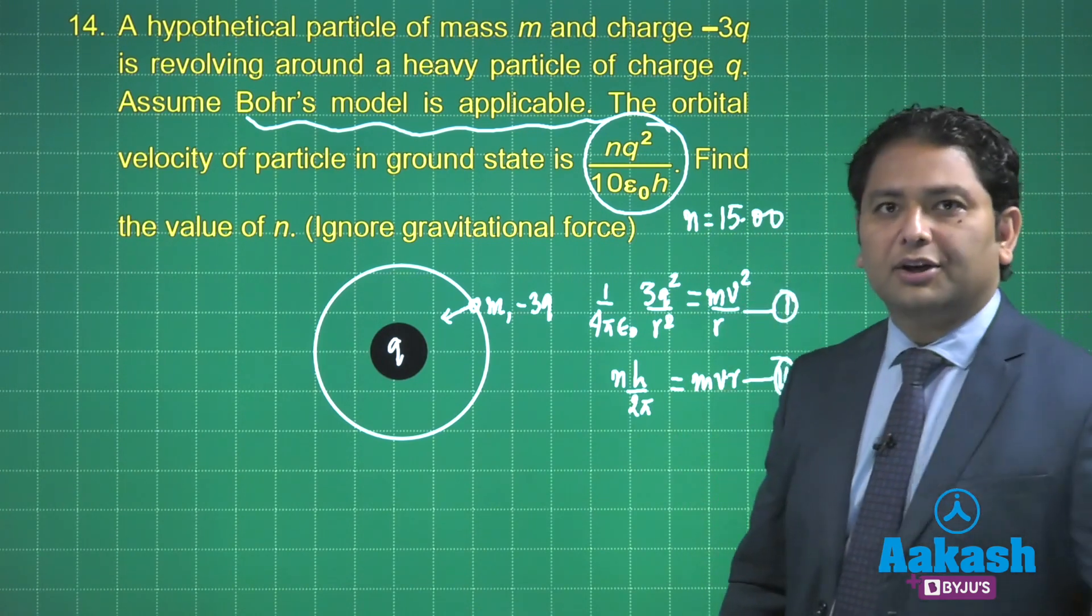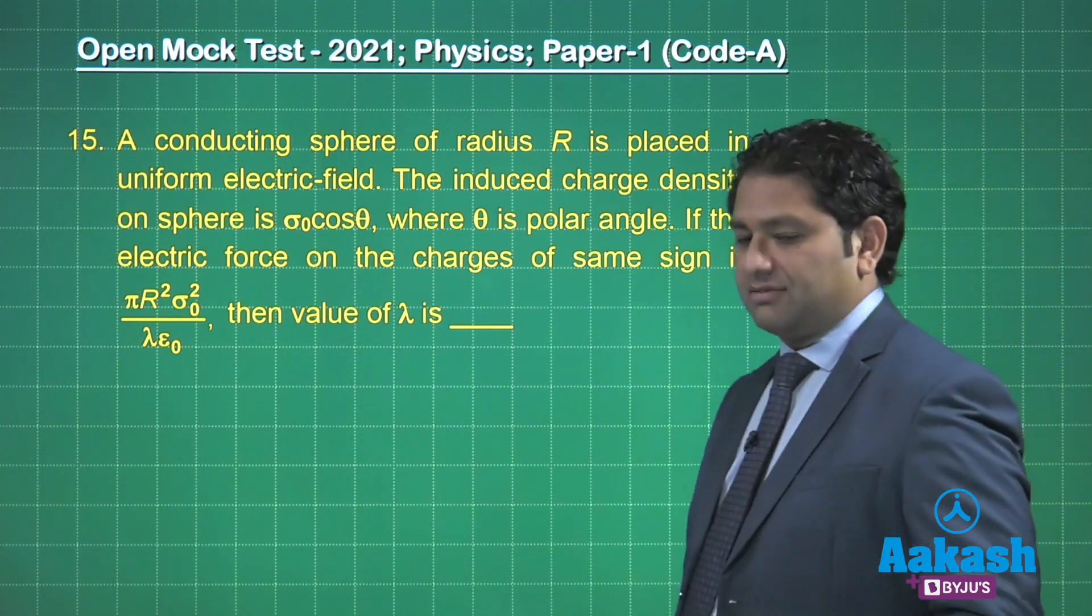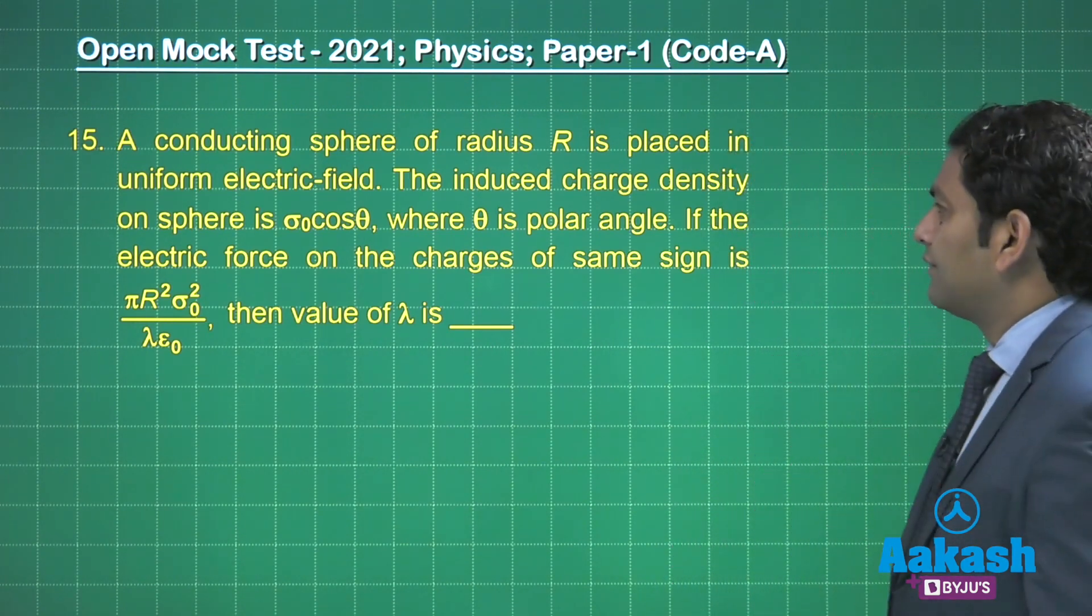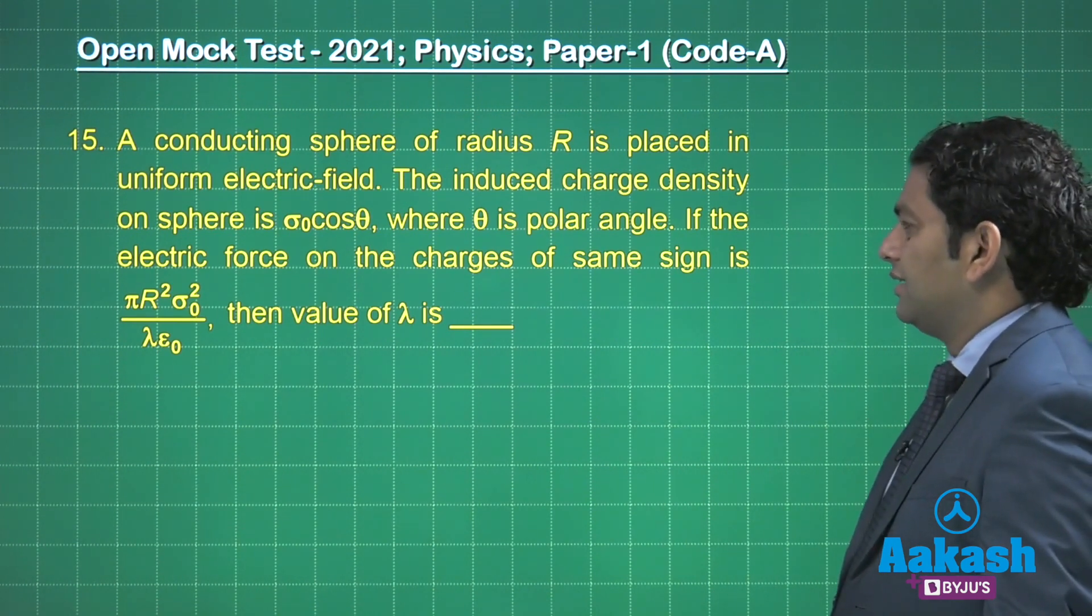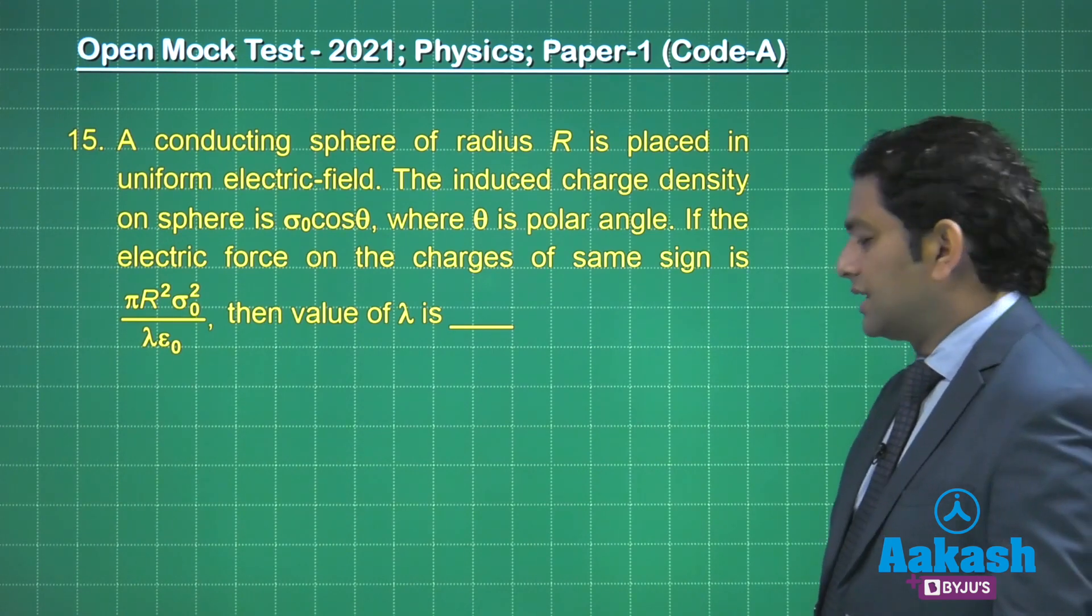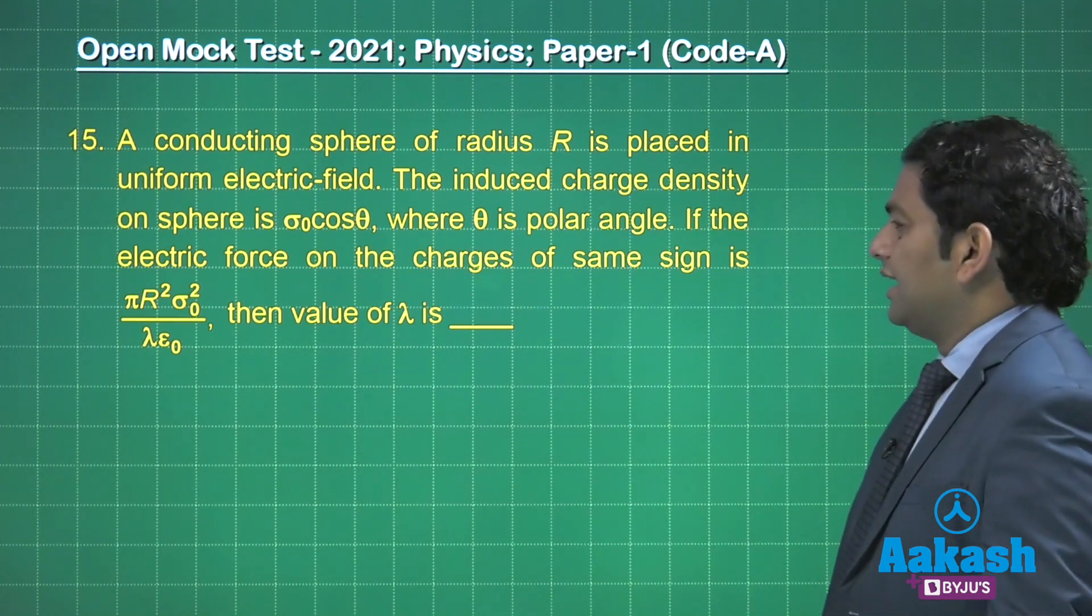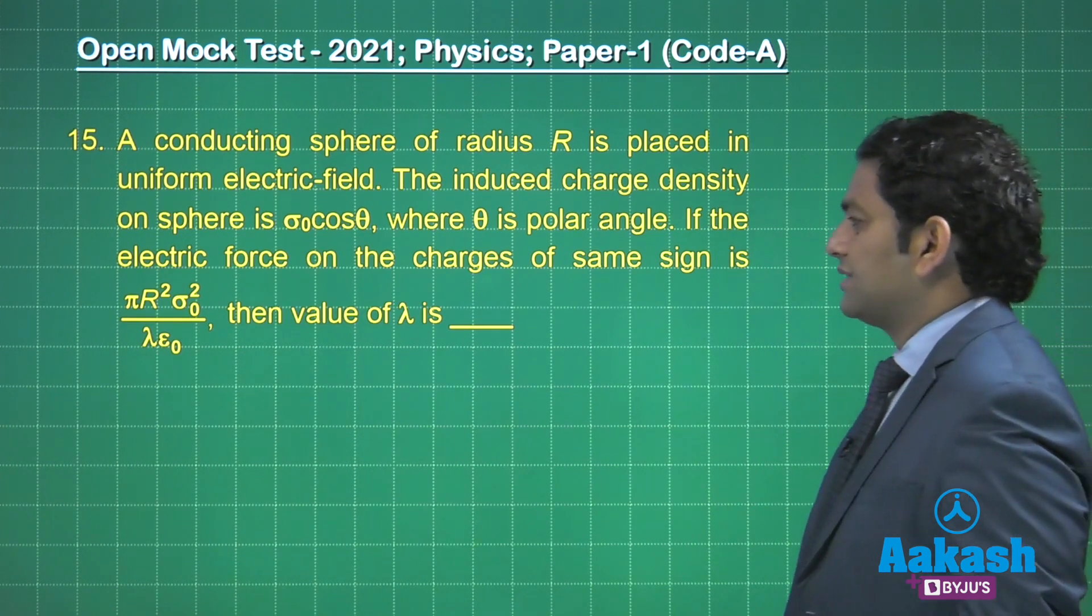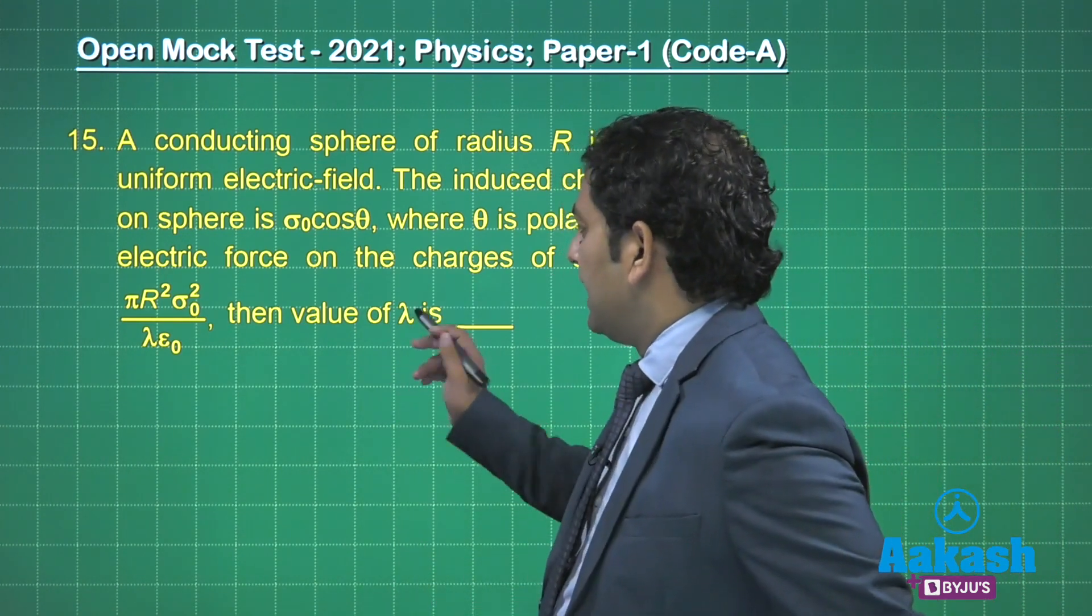Question 15: A conducting sphere of radius R is placed in a uniform electric field. The induced charge density on the surface - we know the charge would come only on the surface - is σ₀cosθ. If the electric force on the charges of same sign is this much, we need to calculate the value of λ.